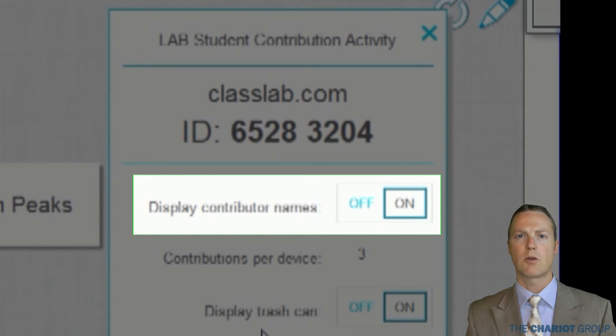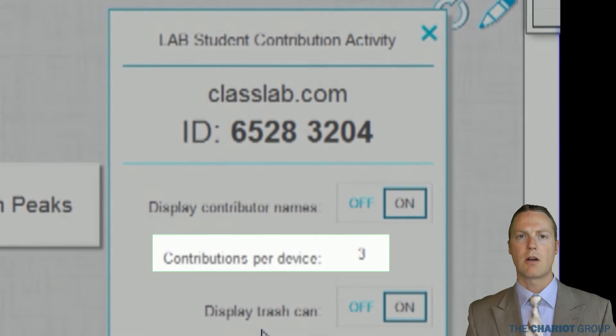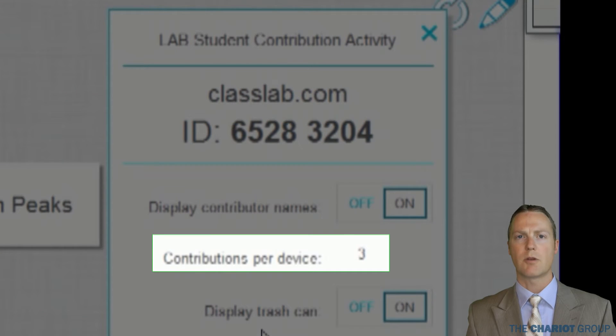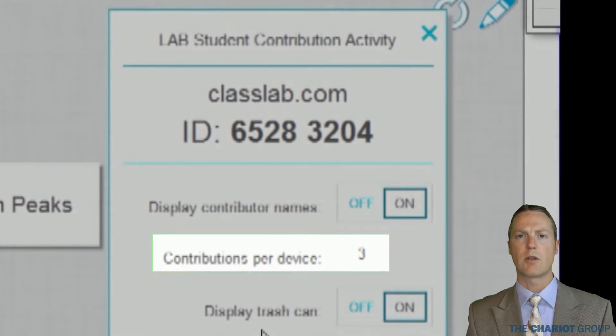Below that is the control to turn off showing the first three letters of their name on their pin. Next, it shows how many contributions each student can contribute. This number was set as we created the activity.